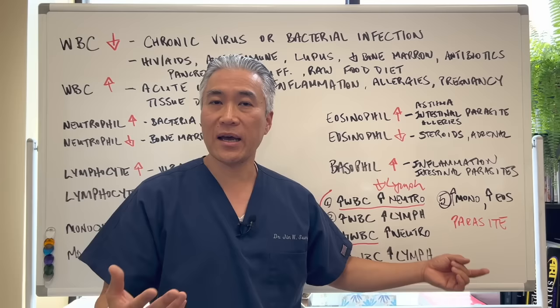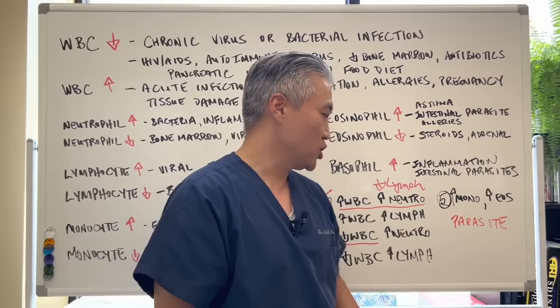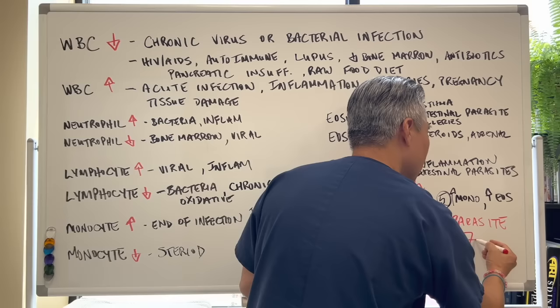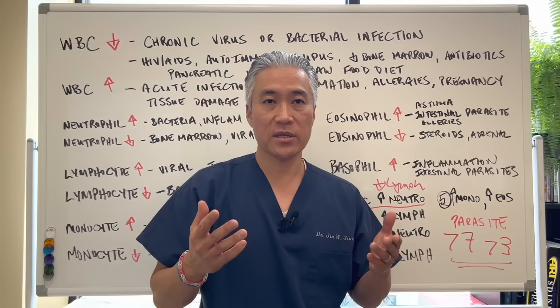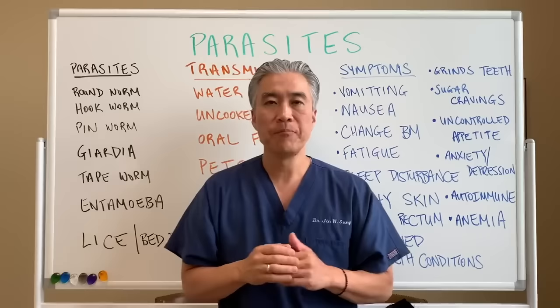If your white blood cell is low with slight elevation of neutrophils, there could be bacterial overgrowth — maybe in the GI tract. If you have an increase in monocytes and eosinophils, think parasites and do a stool analysis. Usually monocytes will be greater than 7% and eosinophils greater than 3% with parasites. That's the clinical pearl.